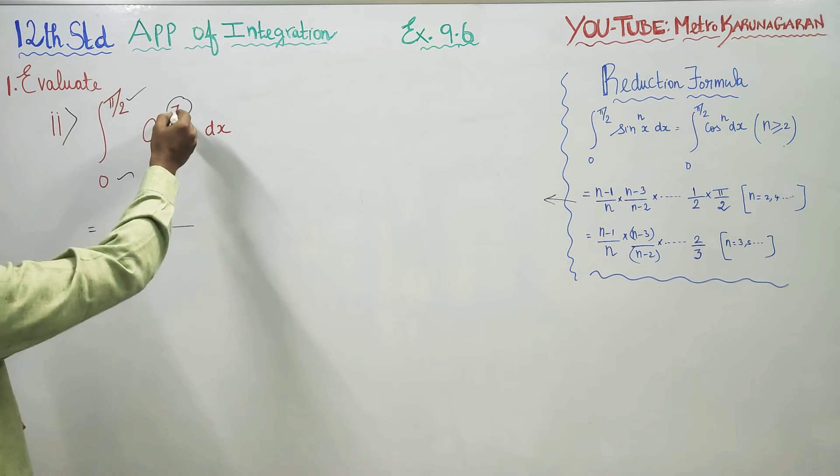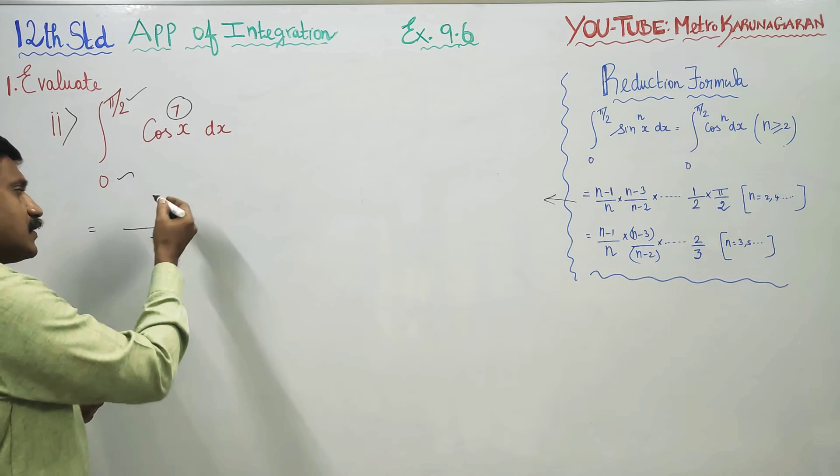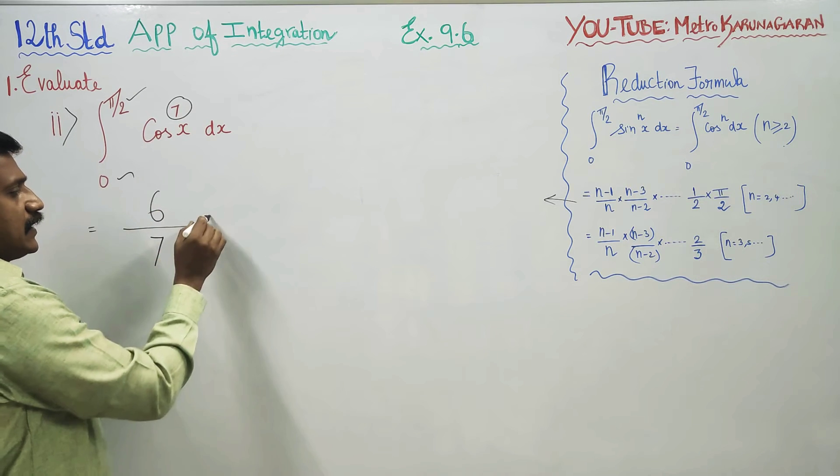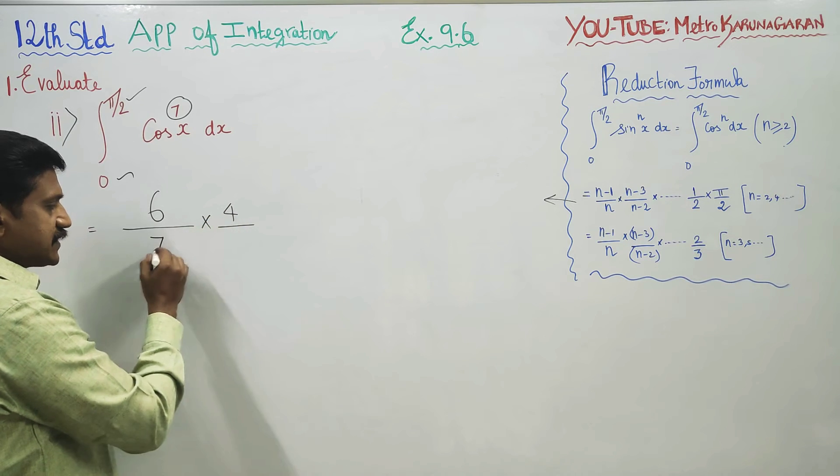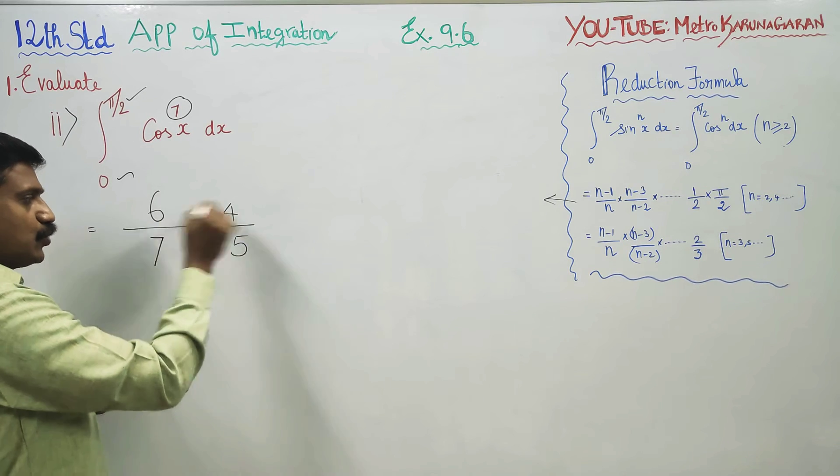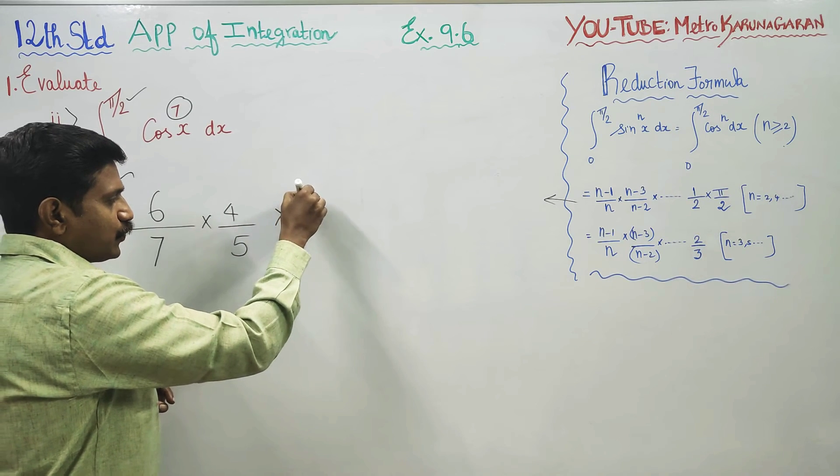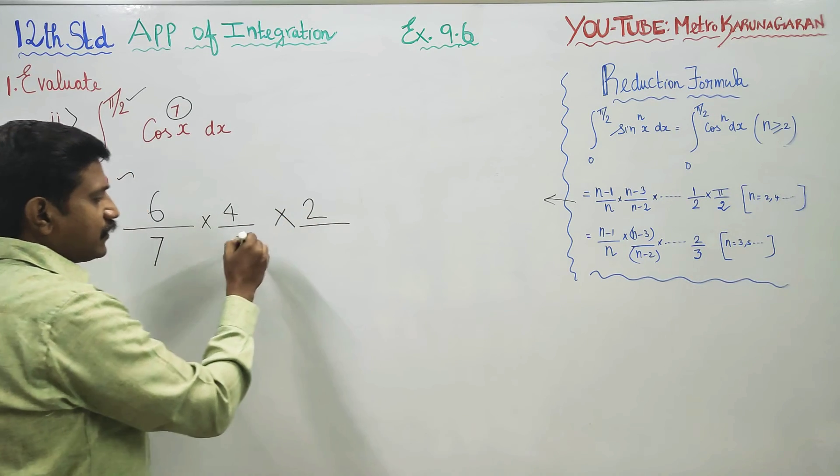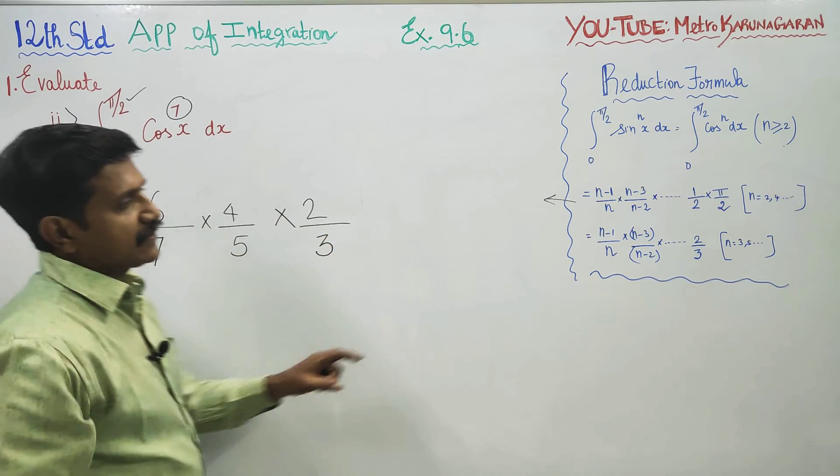Write the denominator starting with 7, which is your power. Then subtract 1 to get 6. Subtract 2 from 6 to get 4. Above, write 7, subtract 2 to get 5. Below write 2. Then, subtract 2 from 4 to get 2. Above 5, subtract 2 to get 3. If you reach 2/3, the sum is stopped.